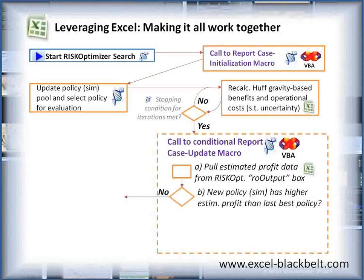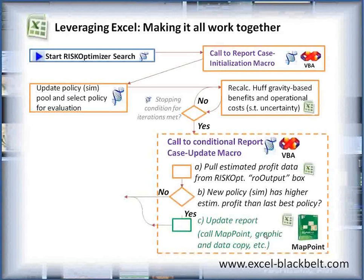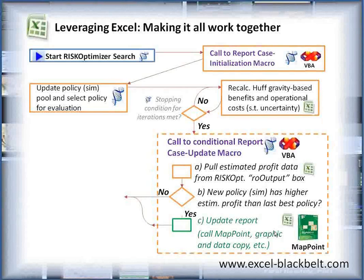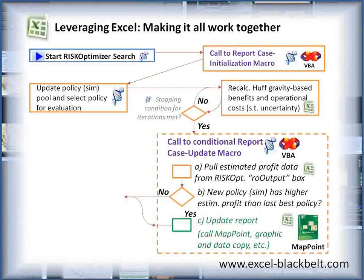Because it's within Excel, I can easily extract that information from this text box and test to see if that value is greater than the best solution seen to date. If it is, then I'm going to be calling on MapPoint to update the graphical output — giving me a new impression of what the market's going to look like if we go with that new policy. It's going to continue to update those maps as better and better policies are discovered.